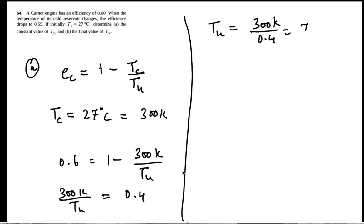Okay, now in part B, the efficiency drops to 0.55. So now what is the Tc? Th is 750 Kelvin.